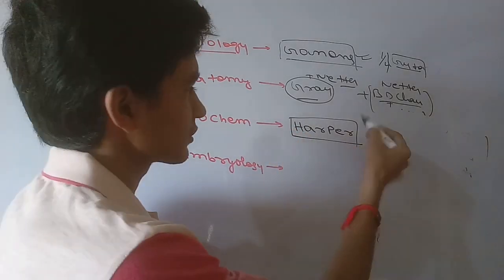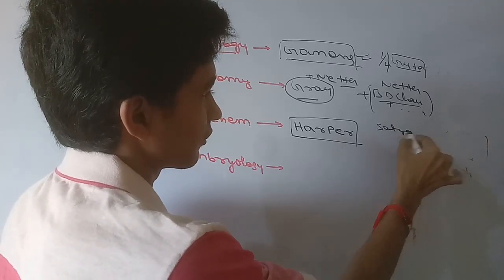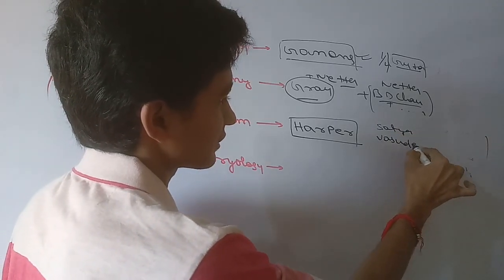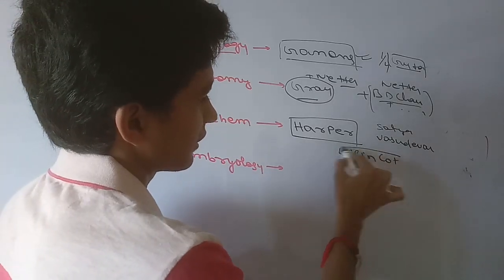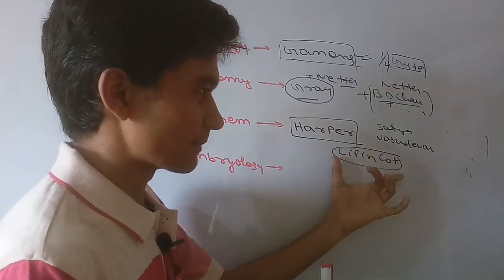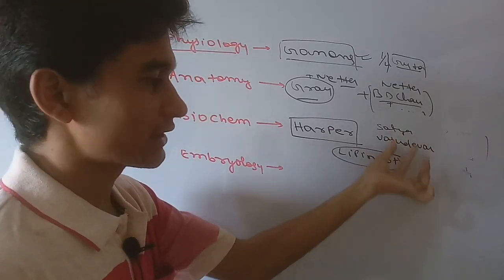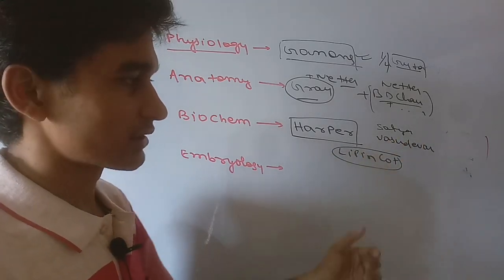Students prefer instead of this Indian writers like Satyanarayan and Vasudevan. Or you can prefer Lippincott. Lippincott is the best because it is not too vast, it is simple and very precise. So instead of following Indian writers, go to Lippincott. This is a foreign writer, and because in these two books there are many mistakes given, so follow Lippincott. That will be the best choice for your biochemistry.